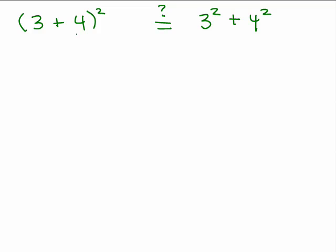So let's start off with in parentheses 3 plus 4. If we square that, we're going to get 7 squared, which means 7 times 7, or 49. On the other hand, what is 3 squared plus 4 squared?